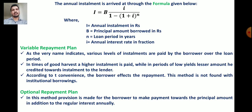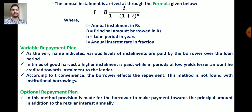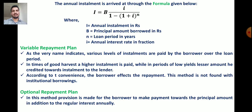The fifth plan is the optional repayment plan. In this method, a provision is made for the borrower to make payments towards the principal amount in addition to the regular interest annually. That is, the borrower can repay an additional principal amount beyond the regular interest payment.